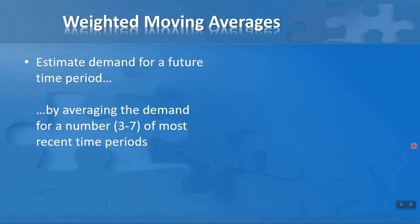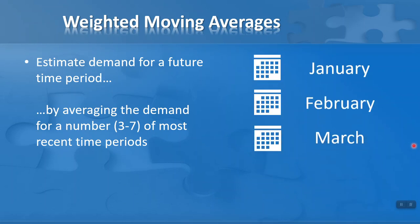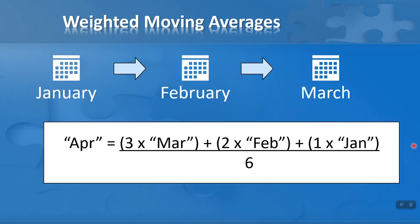Let's say you want to estimate demand for a future time period. One simple way of doing this is to average the demand for a number — typically three to seven — of the most recent time periods. So let's say we've got actual data for January, February, and March — this could be stock levels or sales data — and I'd like to use this data to make a prediction for April, the next time period. With a weighted moving average, yes you can.